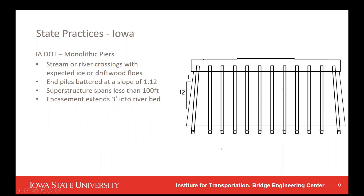One step we took was to compare current practices in Iowa to neighboring states, Minnesota and Wisconsin. With respect to monolithic piers in Iowa, these are primarily used in stream or river crossings where ice or driftwood flows are expected. The end piles are battered at a slope of 1 to 12, primarily used on superstructures where spans are less than 100 feet, and the encasement into a riverbed extends a minimum of three feet.